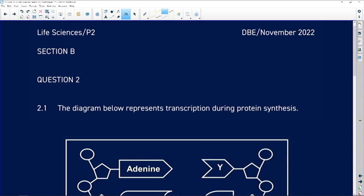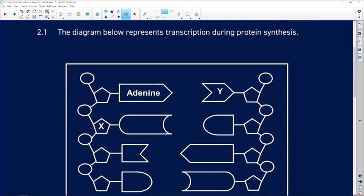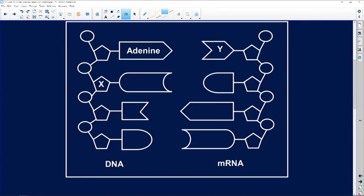So our first question, 2.1, says the diagram below represents transcription during the process of protein synthesis. And here we've got the diagram of transcription, here we've got our DNA template, one of the strands of DNA, and here we've got the mRNA, which is the copy of that DNA strand.